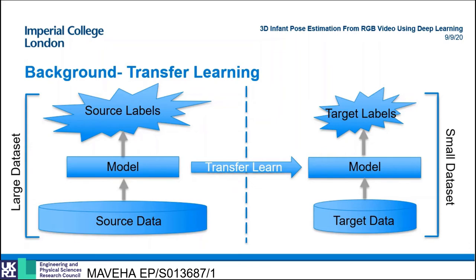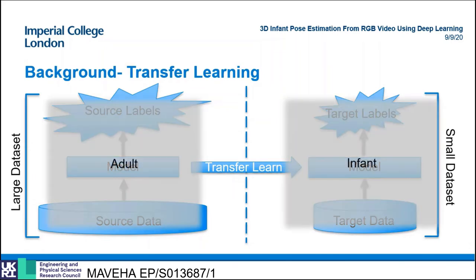Theoretically, CNN features that are common between the two tasks do not have to be relearned for the target dataset, hence boosting performance. In this project, the large adult datasets were used to pre-train the model on pose estimation tasks before fine-tuning on the infant dataset.